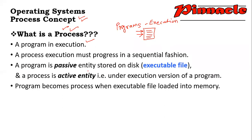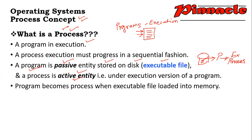A program is a passive entity stored on a disk, and a process is an active entity that is the under-execution version of a program. The program is a passive entity — it is an executable file stored on a disk; it doesn't do anything. The process is an active entity because when the program comes to execution mode, the process becomes active. Both are equally important.